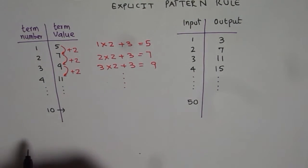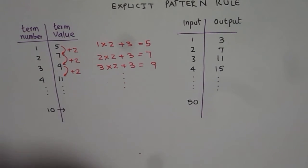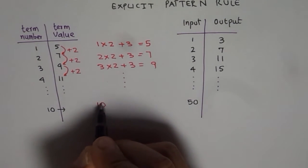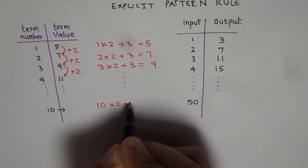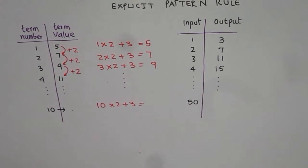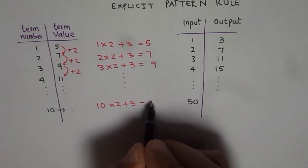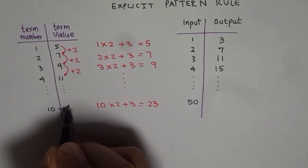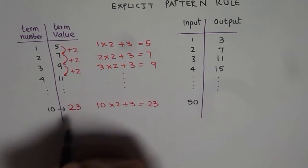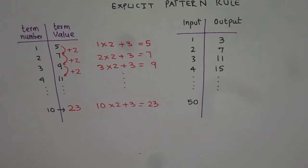So for 10, what can I do? 10 is my input number. I say 10 times 2 plus 3 should be my number on this side. 10 times 2 is 20. 20 plus 3 is 23. So I should get 23 here. So that is how I can get the 10th number using my explicit pattern rule.